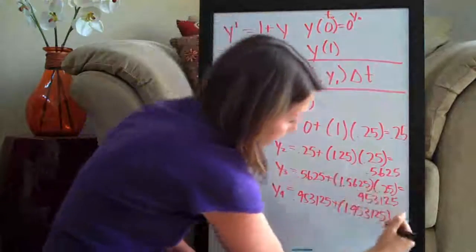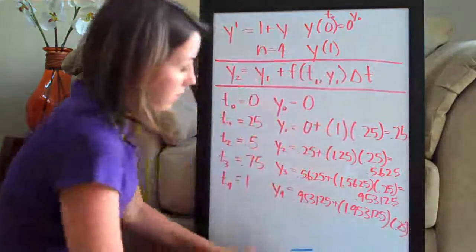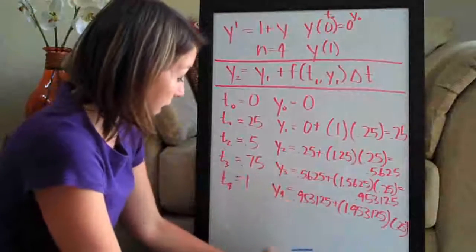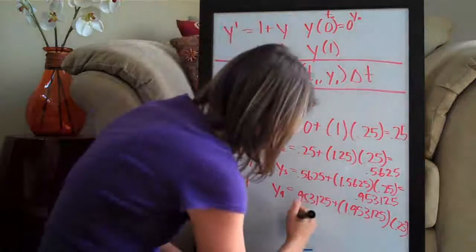And then as always times delta t, sorry for the cramped board here, which is 0.25. And the answer here for y4 is 1.4414062.